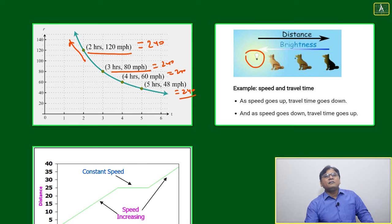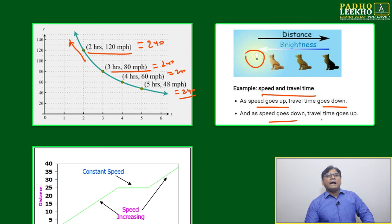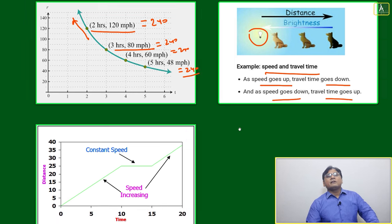This is an analogical figure. Brightness and distance are inversely proportional—if you are more close, brightness increases. For speed and travel time: as speed goes up, travel time goes down; as speed goes down, travel time goes up.